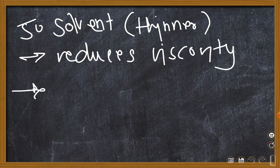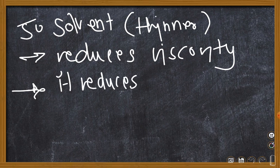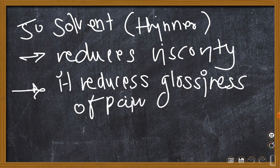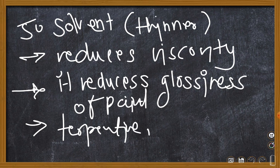Another thing regarding thinner is it reduces glossiness of the paint. The examples for thinner are turpentine - the common example. In distemper, we can use water. In oil paint, we can also use alcohol as a thinner or solvent.